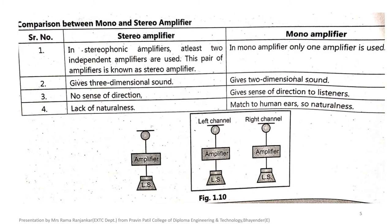In a stereophonic amplifier, at least two independent amplifiers are used; this pair of amplifiers is known as a stereo amplifier. In a mono amplifier, only one amplifier is used. A stereo amplifier gives three-dimensional sound, while a mono amplifier gives two-dimensional sound. There is a sense of naturalness in stereo, whereas there is a lack of naturalness in mono amplifier.